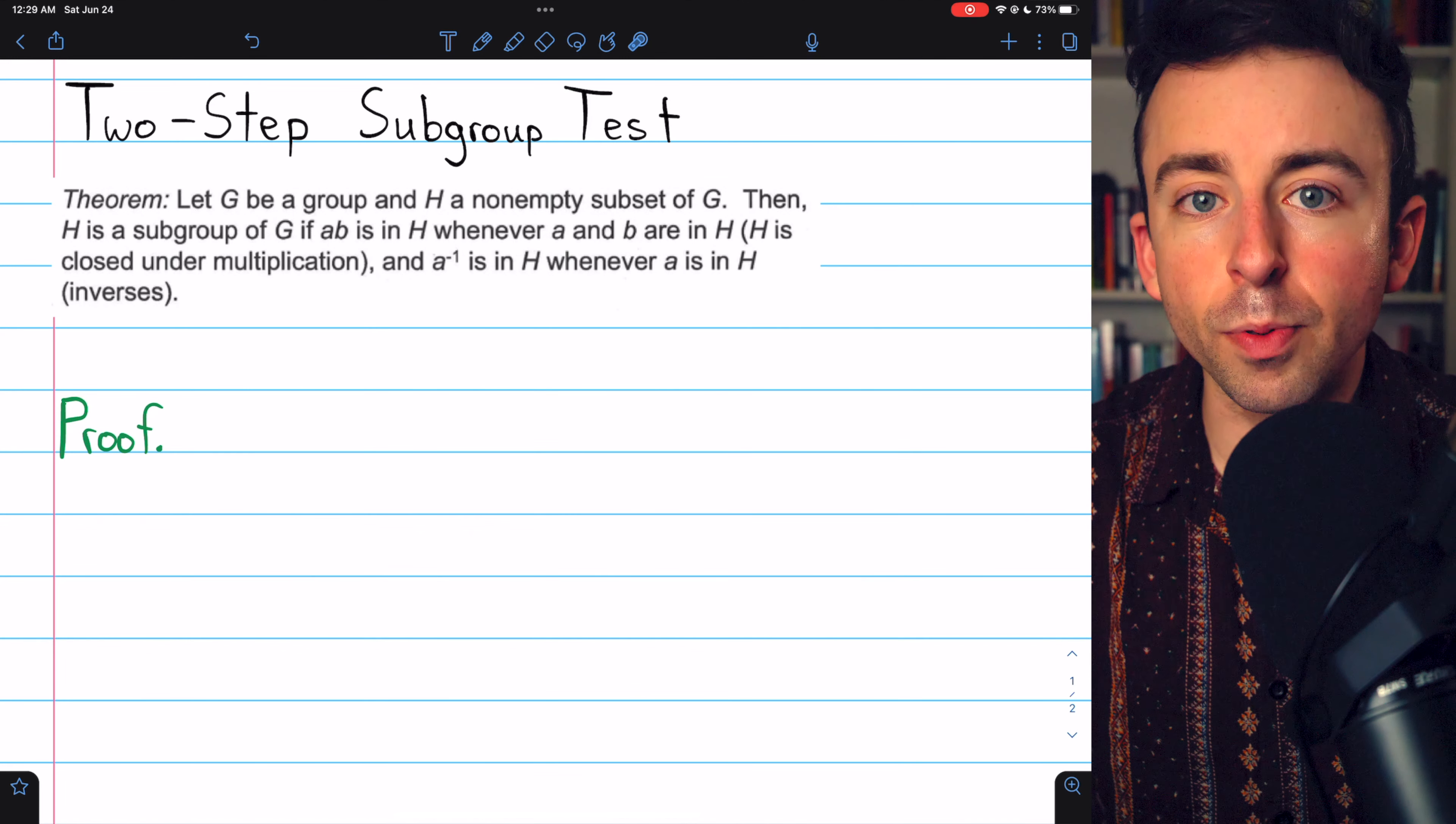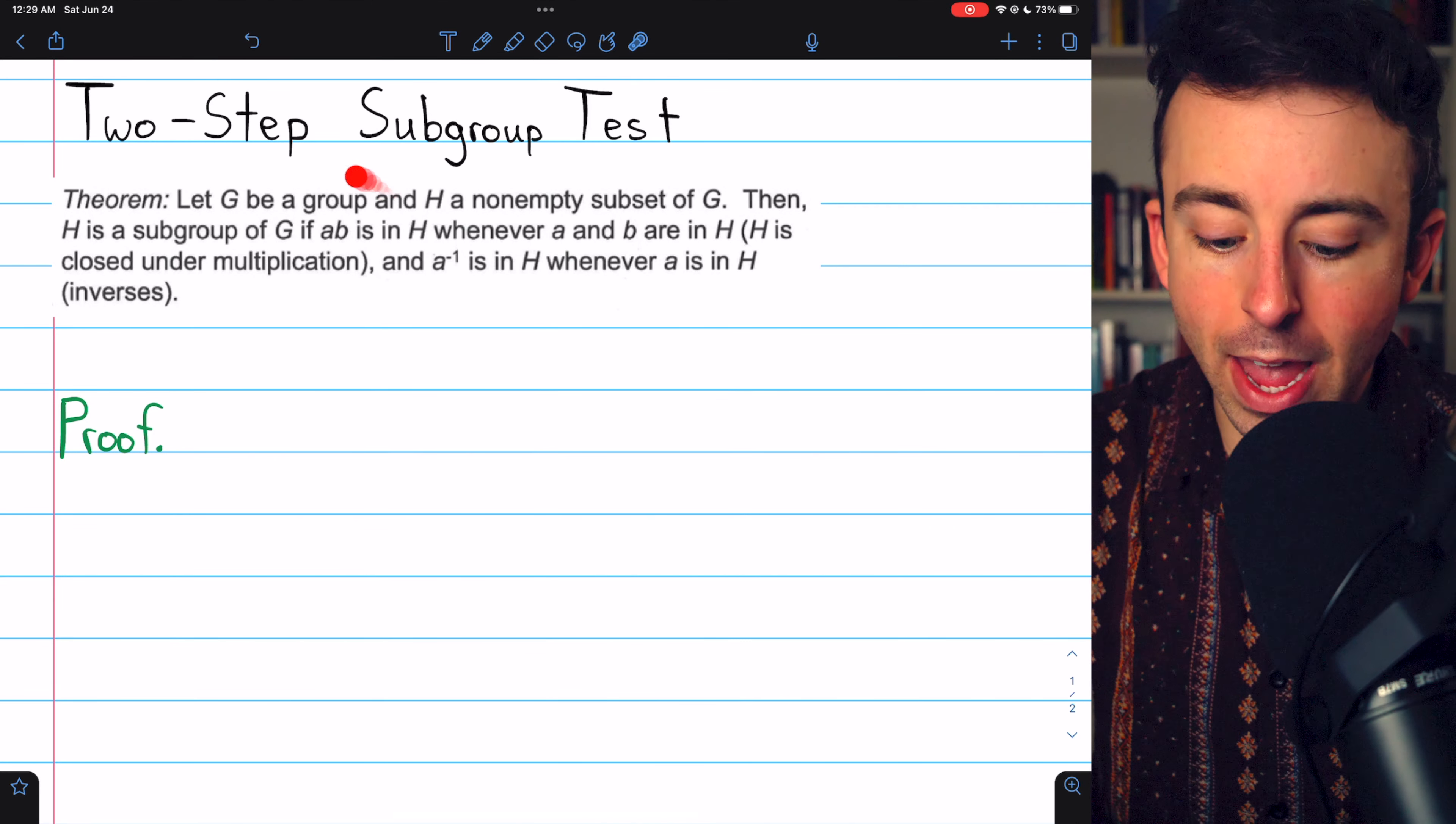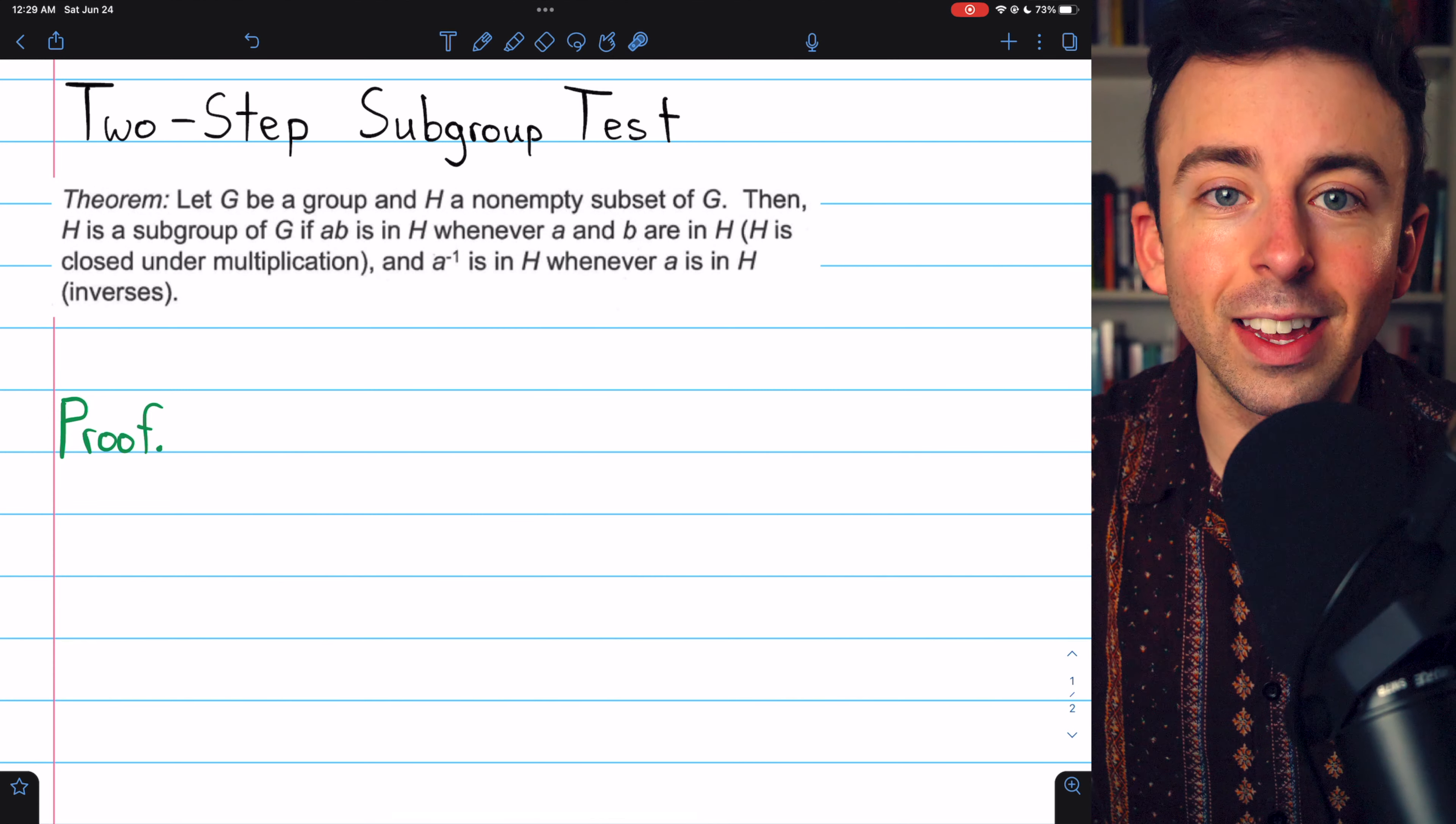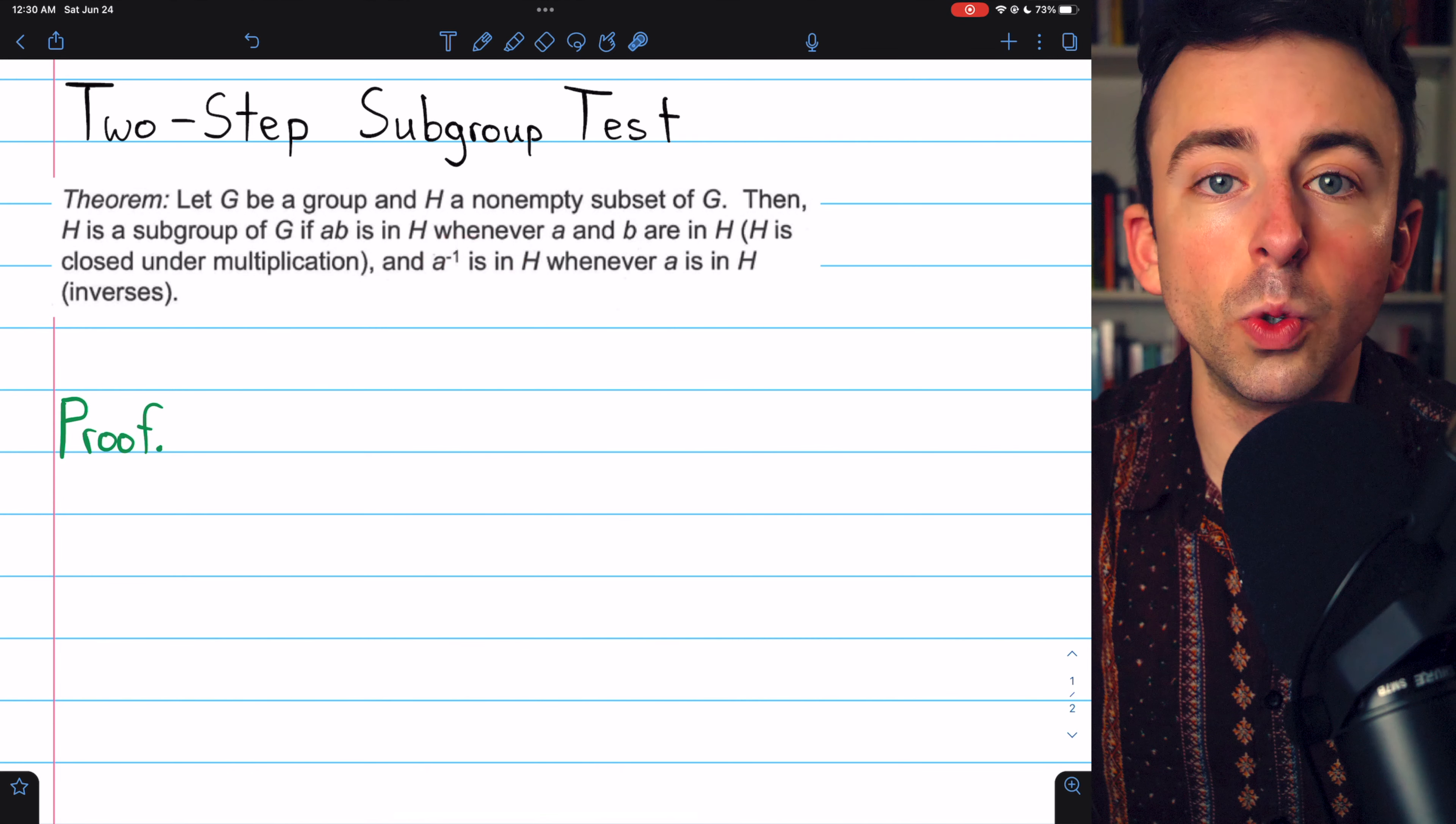What we're really doing here is proving an equivalent definition. We're saying that H being a subgroup of G is the same as this. Now, if H is a subgroup of G, then obviously these properties are true because H is a group, so certainly it's closed with respect to the operation and inverses.